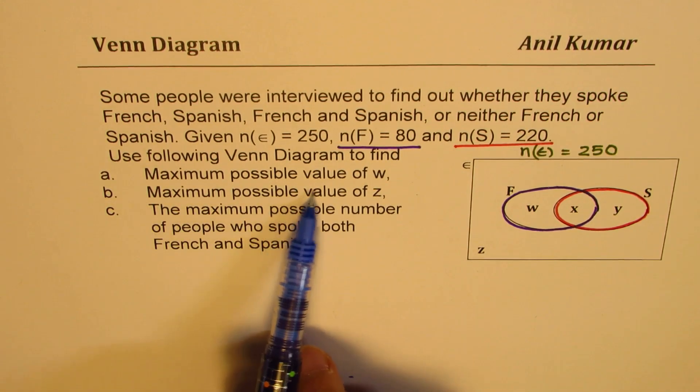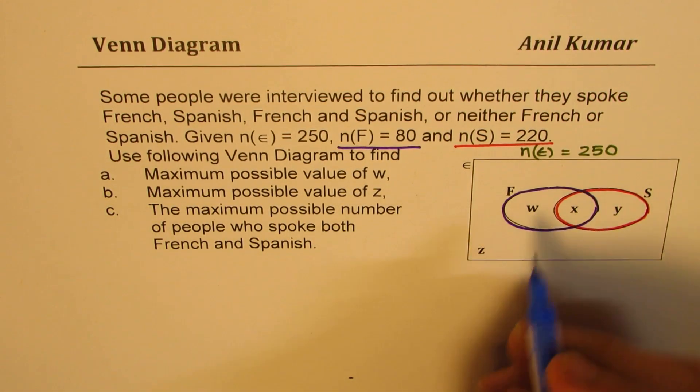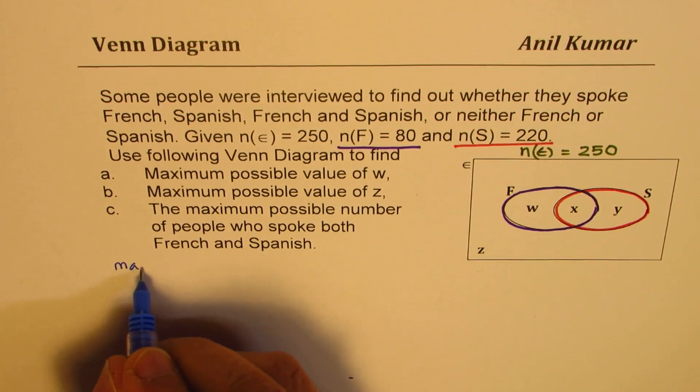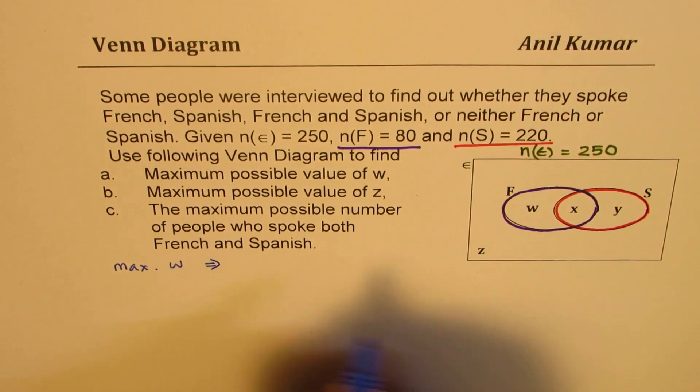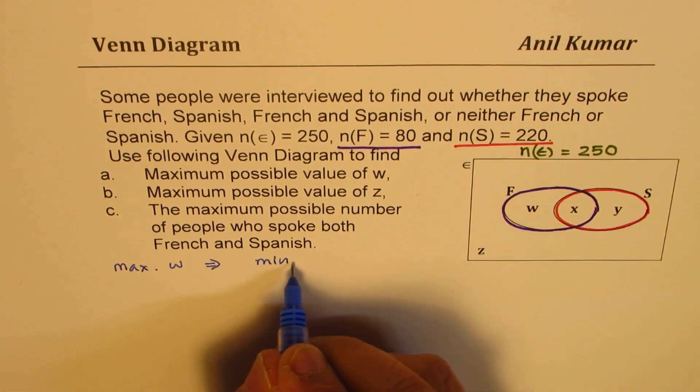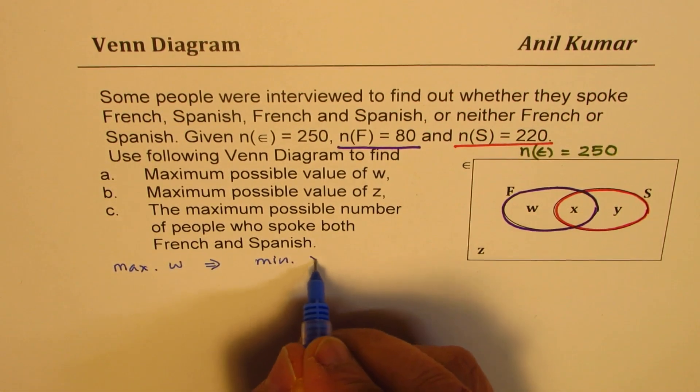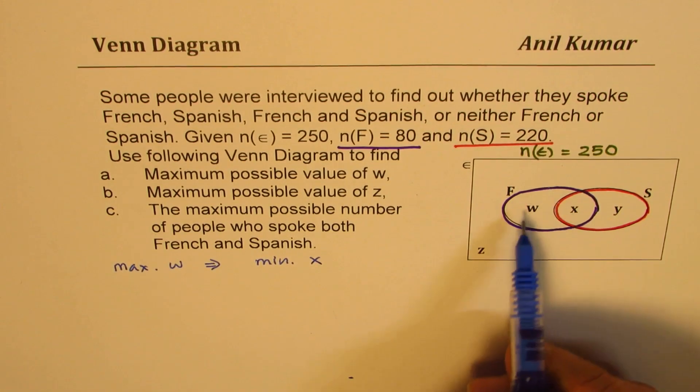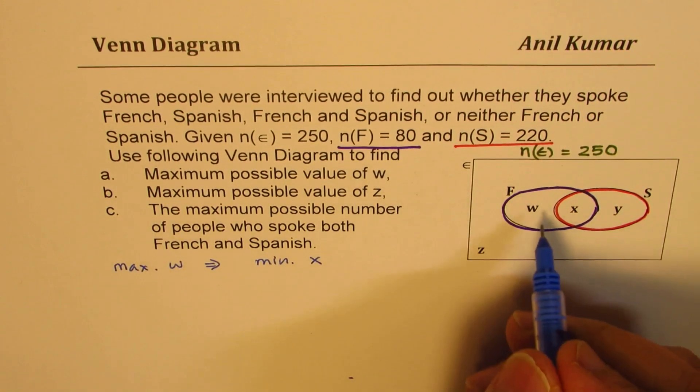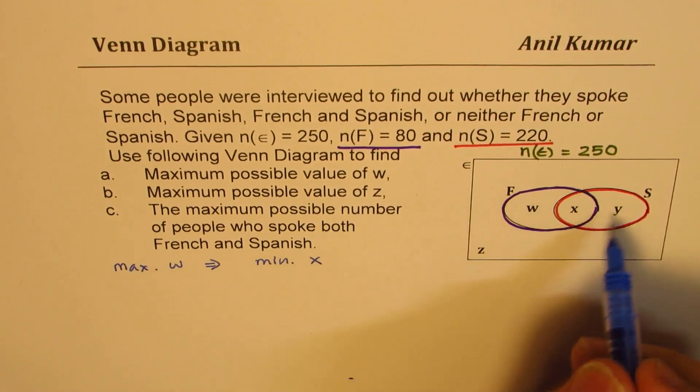First, maximum possible value of W. So what does this mean? Maximum W implies minimum X, right? That's simple logic. W is only French speaking. How do we figure this out?